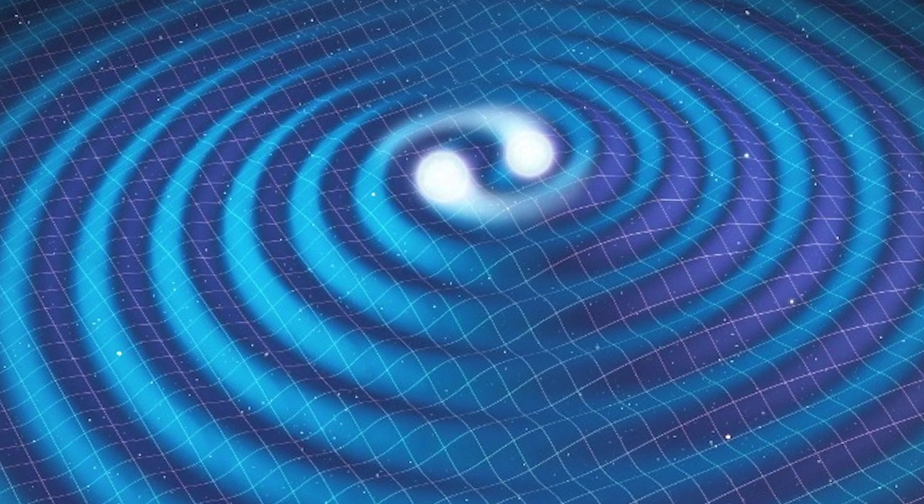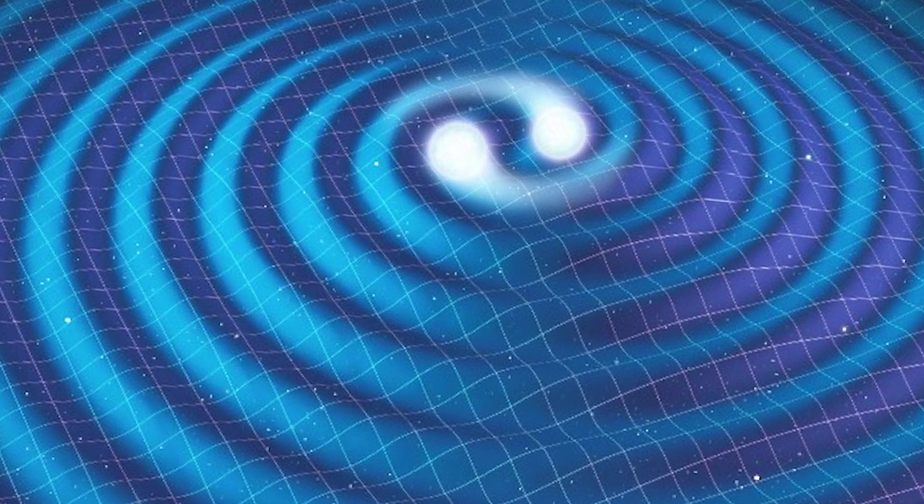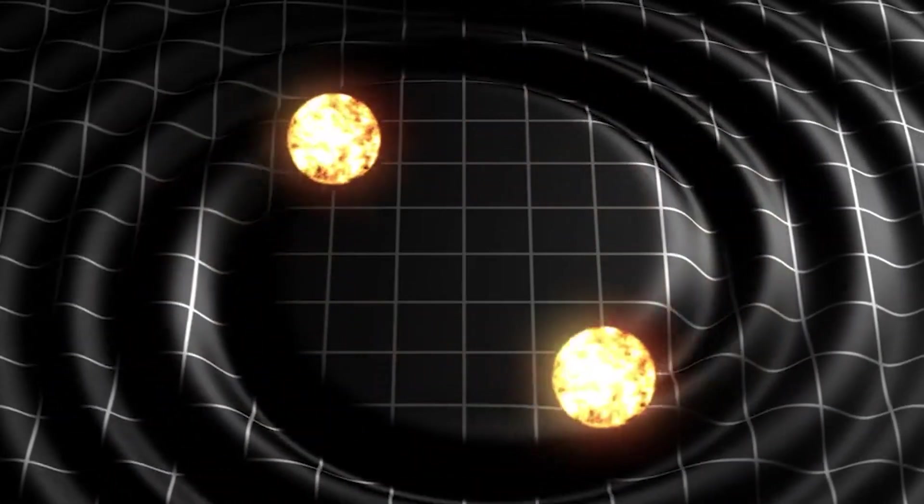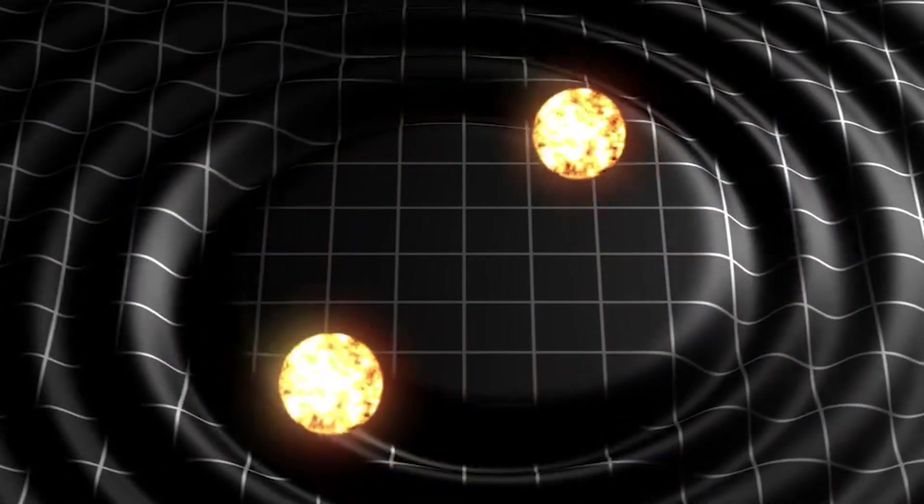The problem is, unlike light particles, gravitons, if they really do exist, must hardly interact with anything, making them super hard to detect. So, even though we think they might be out there, we haven't found a way to prove it yet. But, if we ever do catch a graviton, it could unlock a whole new understanding of how gravity works at even the smallest levels.